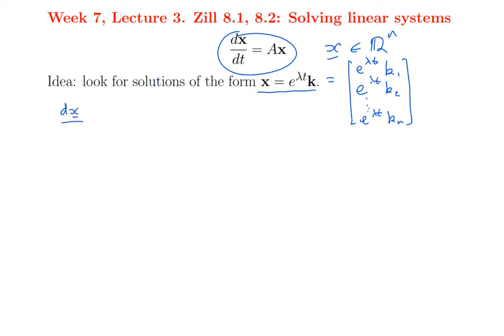So dx/dt, well, differentiating is going to be easy because I chose it to have the same e to the lambda t in each term. It's just going to be lambda e to the lambda t times this vector k. And that must be equal to Ax. Well, Ax is e to the lambda t times A times k, pulling the scalar e to the lambda t out in front.